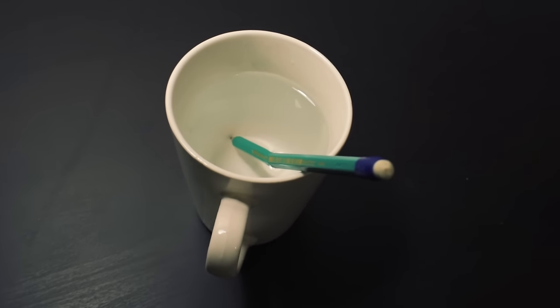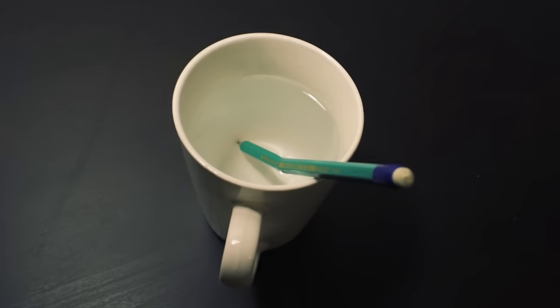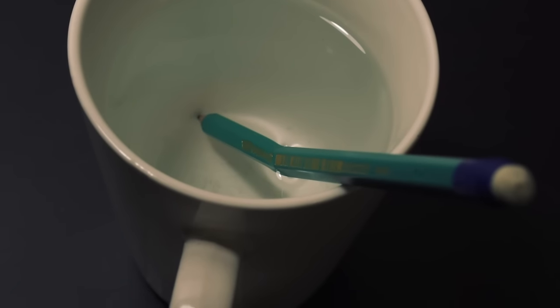If you look from above at a pencil that is partially submerged in water, you see that the part that's under water looks kind of bent or misshapen.